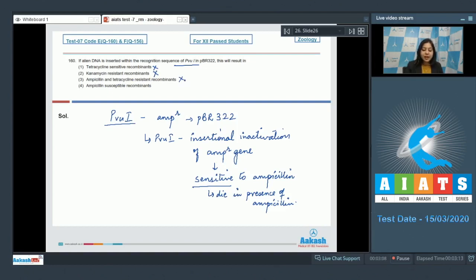Number four, ampicillin susceptible recombinants. This is the correct option as the gene for ampicillin resistance has been inactivated due to insertion of foreign DNA. So the correct answer here becomes option number four. Moving ahead to the next question students.